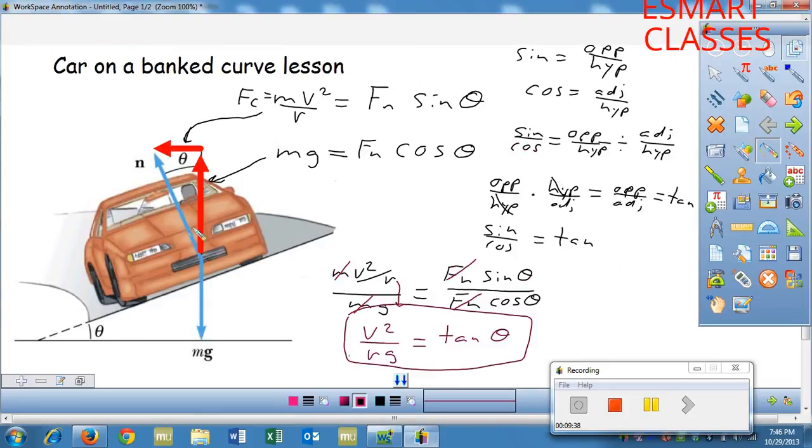If you take the normal force, we can divide it into two parts. The horizontal part, which just is equal to mv squared over r, and it's also equal to the normal force times the sine of theta, since it's the opposite of theta.